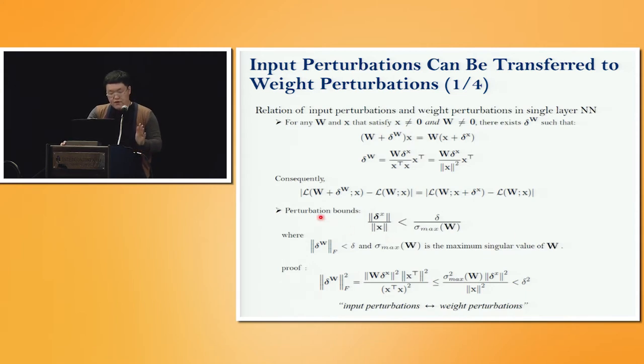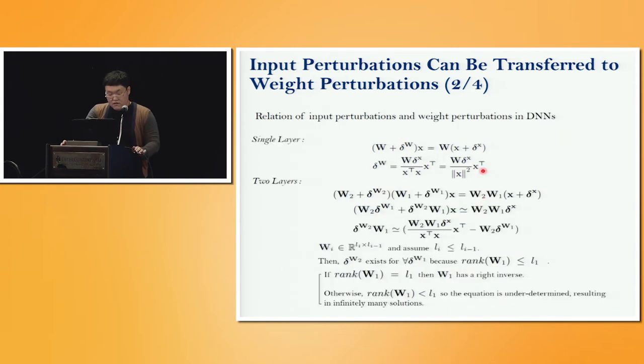Furthermore, we can calculate this nice perturbation bounds. The left term is relative magnitude of perturbation and this is relative magnitude of weight perturbations. By calculating Frobenius norm over this solution.